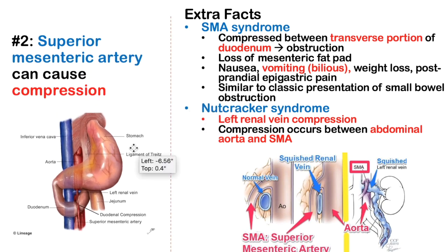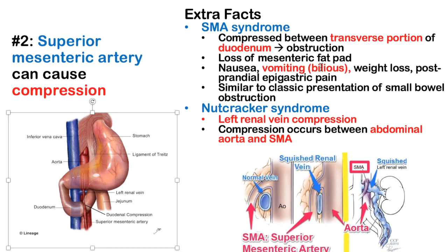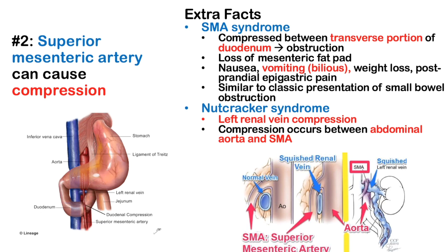When food can't move through the duodenum, you get nausea, vomiting, bilious vomiting, weight loss, and postprandial epigastric pain — it looks a lot like a small bowel obstruction. This affects the third (transverse) portion of the duodenum. The SMA is enveloped by lymphatic and adipose tissue with a mesenteric fat pad that cushions between the artery and the duodenum. When you lose that fat pad, it compresses the distal duodenum. Risk factors include cancer, HIV, malabsorption syndromes like celiac disease, and scoliosis surgeries.